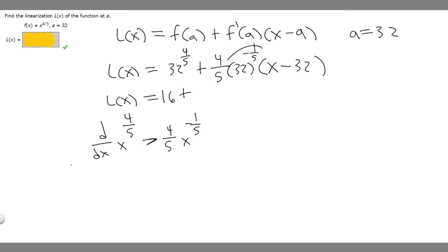Plus, and then 32 to the minus 1/5 is the same thing as 1/2. So we have 4/5 times 1/2, which just becomes 4/10. And 4/10 we can simplify to be 2/5.